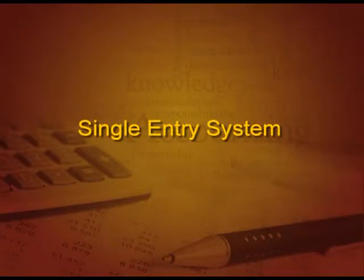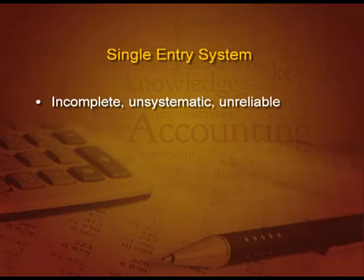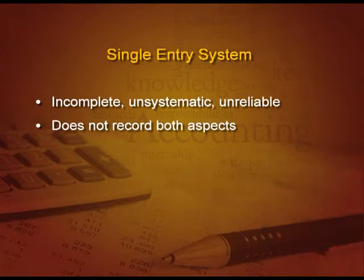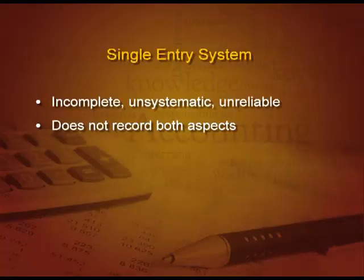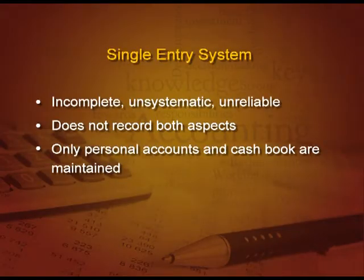The second system is single entry. This is an incomplete, unsystematic, and unreliable system. As the name suggests, we are not recording both aspects. Single entry means one aspect — sometimes we record two aspects for one transaction and one aspect for another, and moreover we record only personal accounts and cash books, not other things like real accounts, etc.